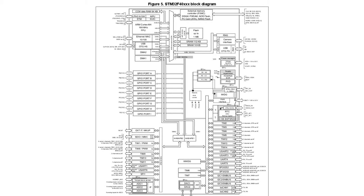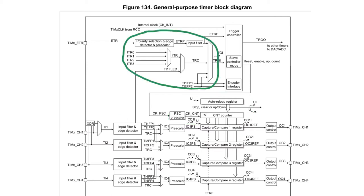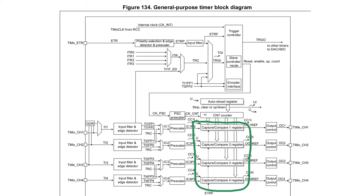Timers sound quite boring — they count, and they can count at different speeds to different values, and can be triggered by either software, hardware, or other peripherals. At first glance this doesn't sound very useful apart from delays and timeouts. The usefulness of a timer comes from all the features around it. Timers can work independently or can be triggered, reset, and run by external signals.